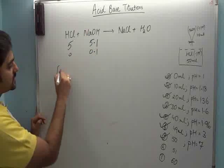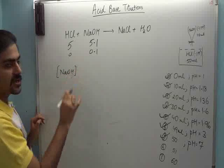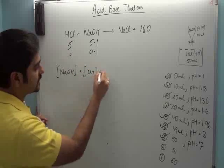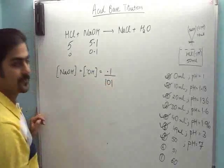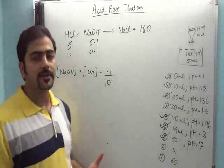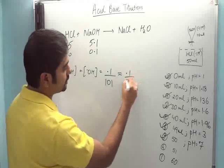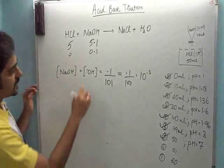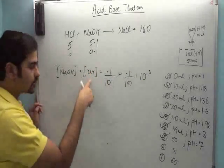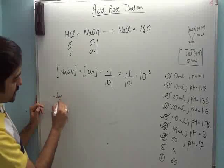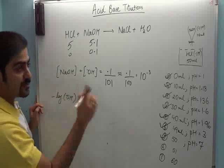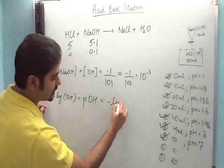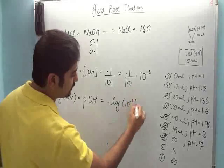Toh humare paas acid toh bacha hi nahin, NaOH bacha. Or important baat yeh ki NaOH mein se H⁺ nahin nikalta hai. NaOH mein se nikalta hai OH⁻. And that is 0.1 upon 101. Approximation leh lete hain — 0.1 upon 100, that is 10 to the power minus 3. This is the concentration of OH⁻. Toh agar mein iska minus log doon, minus log of OH⁻, will not give me pH. It will give me POH. And that value will be minus log of 10 to the power minus 3.